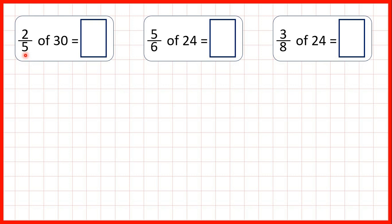For these questions we need to find a fraction of a number. Now we know how to find a unit fraction of a number, so a fraction with a numerator of 1. If the numerator is 1, you can find a fraction of a number just by dividing by the denominator. So if we were finding 1 fifth, we would just divide by 5. Finding 1 sixth we would just divide by 6, and finding 1 eighth we would just divide by 8.